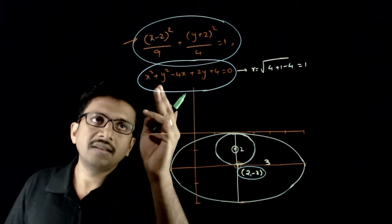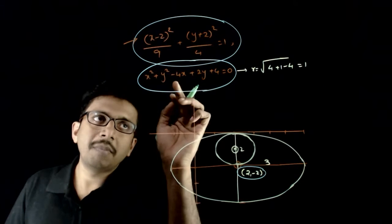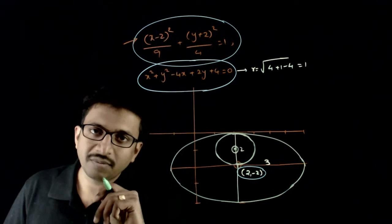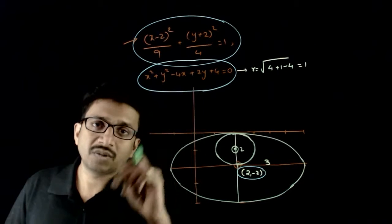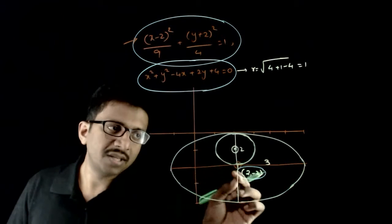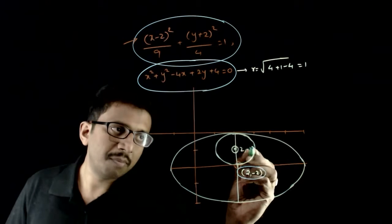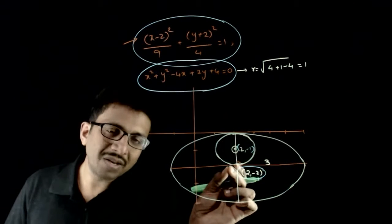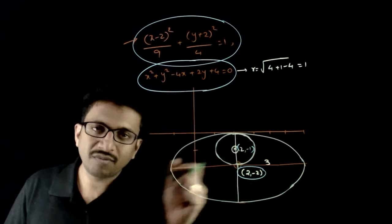For the circle, the center is at (2, -1), which is one unit above the center of the ellipse.